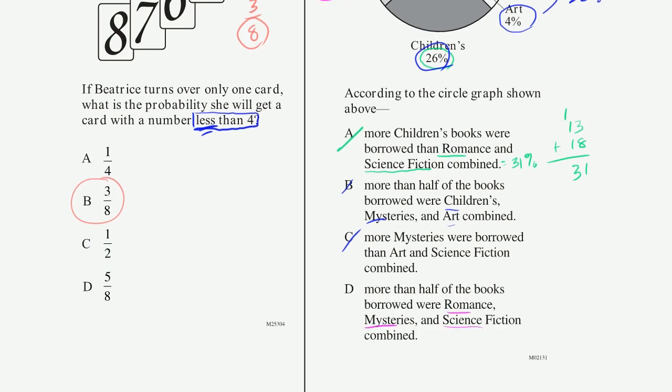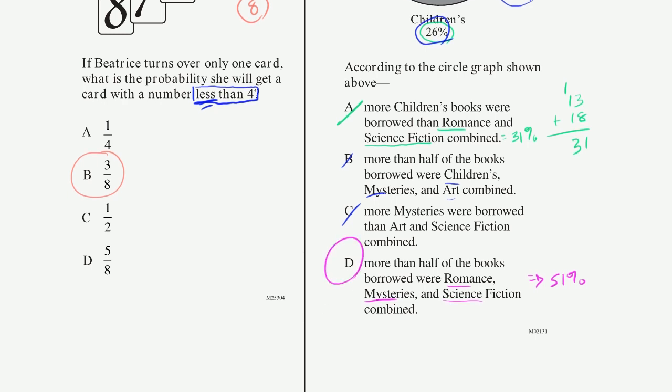So that's right, this is 51% of the books borrowed. So that's definitely more than half of the books. So the correct choice here is D.